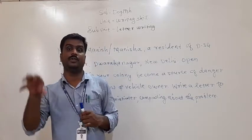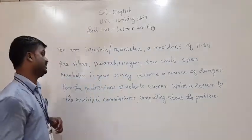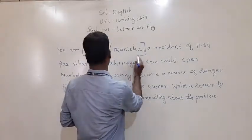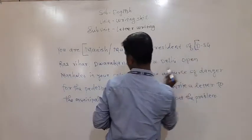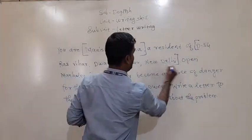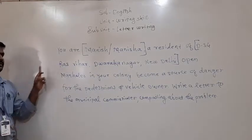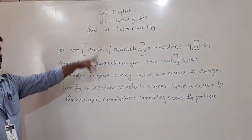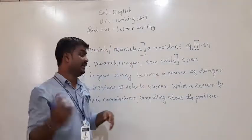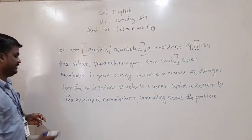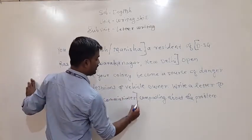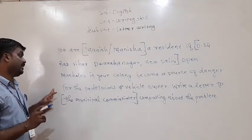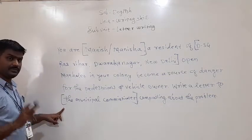From the question, the sender's address is given: Manish or Manisha, D-34, Raskalihar, Dwarka, New Delhi — that is your sender address. The receiver is the Municipal Commissioner — so you write: 'The Municipal Commissioner, Municipal Corporation, New Delhi.' That is your receiver address.